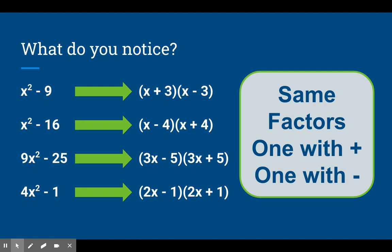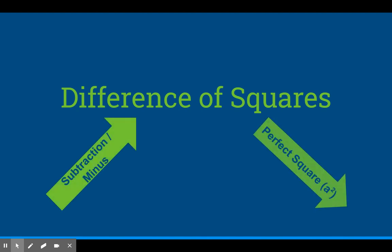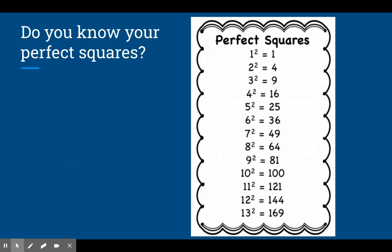So there is a shortcut for difference of squares. Now difference of squares, the word difference is subtraction or minus. And squares are perfect squares. So something times something, something times itself, is a number. That's a perfect square. So do you know your perfect squares? Here's a short list just of some. Obviously there's an infinite amount of perfect squares. You get perfect squares by multiplying the number by itself. So the most common ones that we're going to deal with are 1, 4, 9, 16, 25, 36, 49, 64, 81, 100, and so forth.